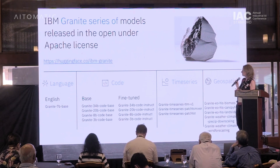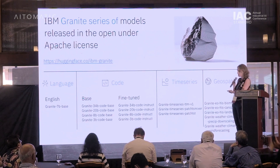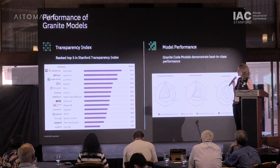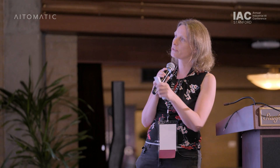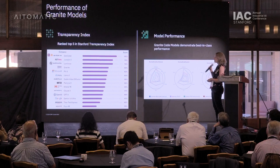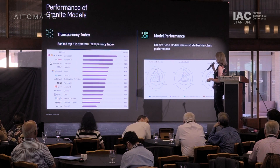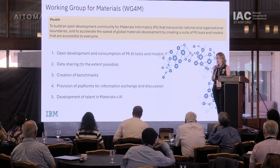I will show you a bit more of what we do in terms of foundational models for materials and chemistry. We do this in the framework of the AI Alliance, whose whole point is to make AI open source. One example is our Granite family, which includes models for language, code, time series, and the newest addition: geospatial models, which are basically weather or earth observation models.